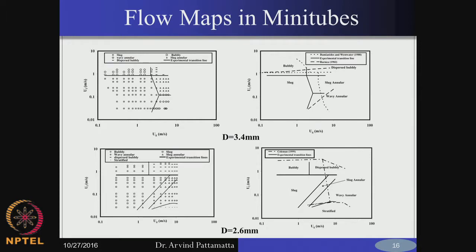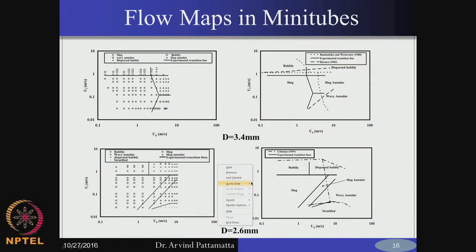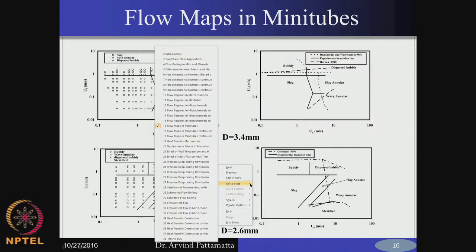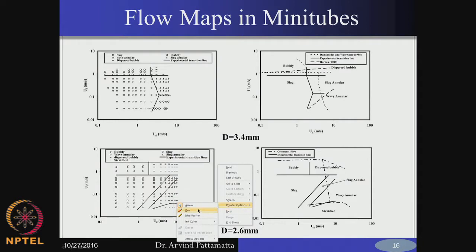These give you what are called flow maps — mapping the different flow regimes in a two-dimensional diagram, which plots the mass flow rate of liquid versus mass flow rate of vapour. On the x-axis we plot generally the mass flow rate of vapour, or sometimes it is just the velocity. On the y-axis you plot the velocity of liquid.